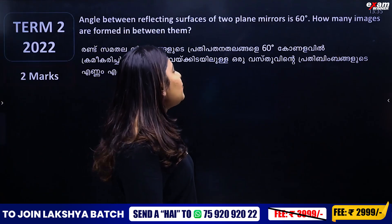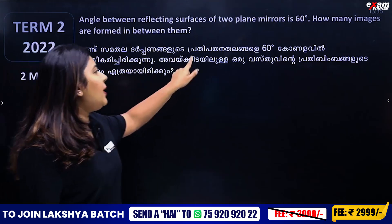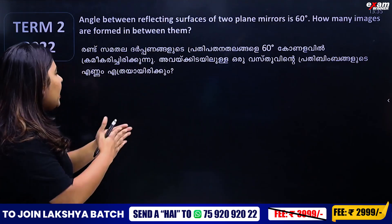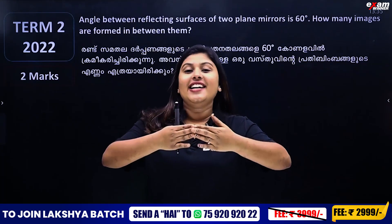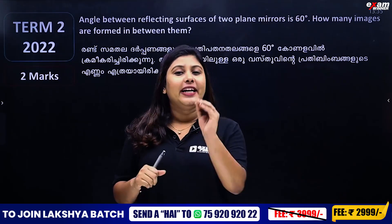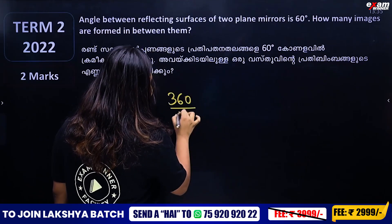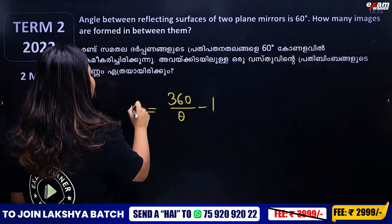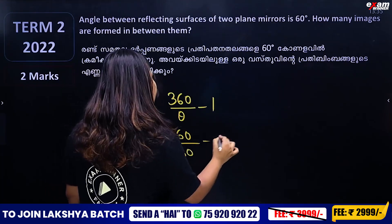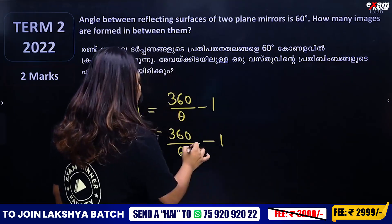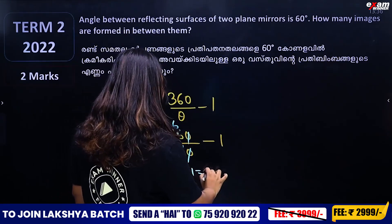The next question: the angle between the reflecting surfaces of two plane mirrors is 60 degrees. How many images are formed between them? The formula is 360 divided by theta, minus 1. So, 360 divided by 60, minus 1. That gives us 6 minus 1, which is 5 images.